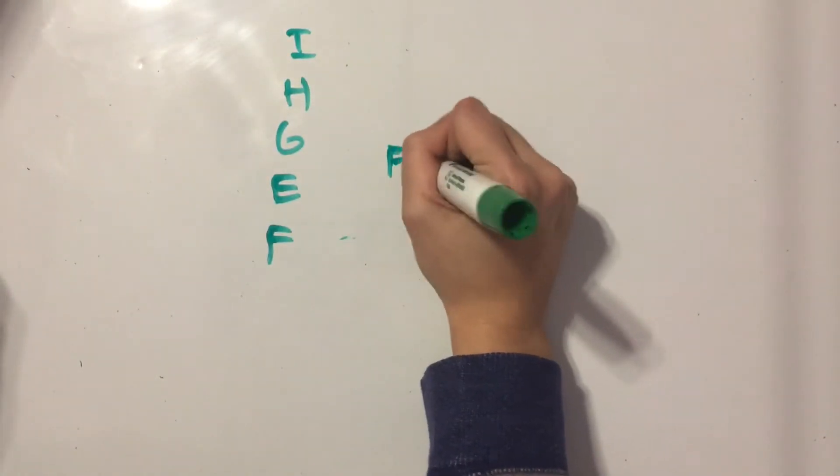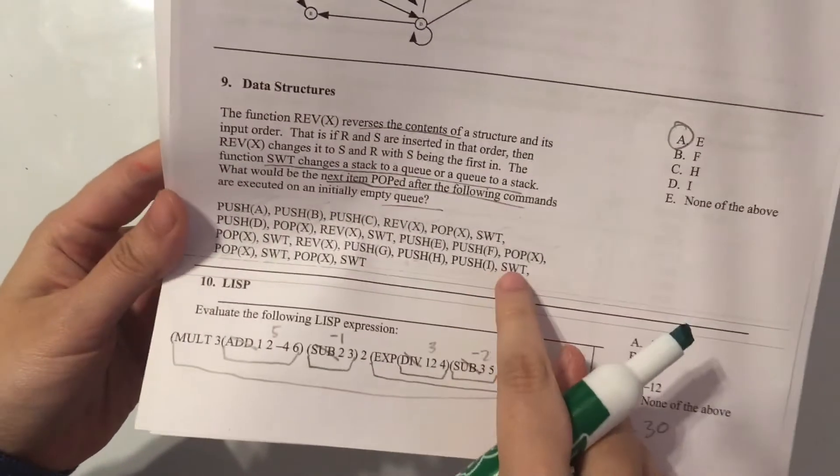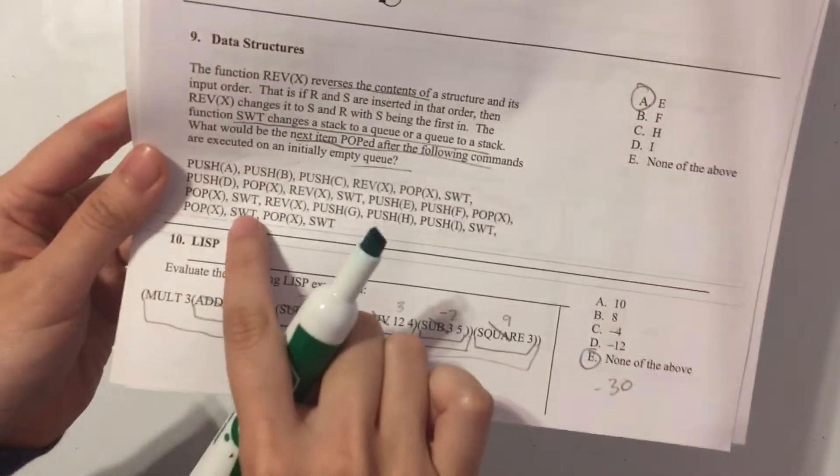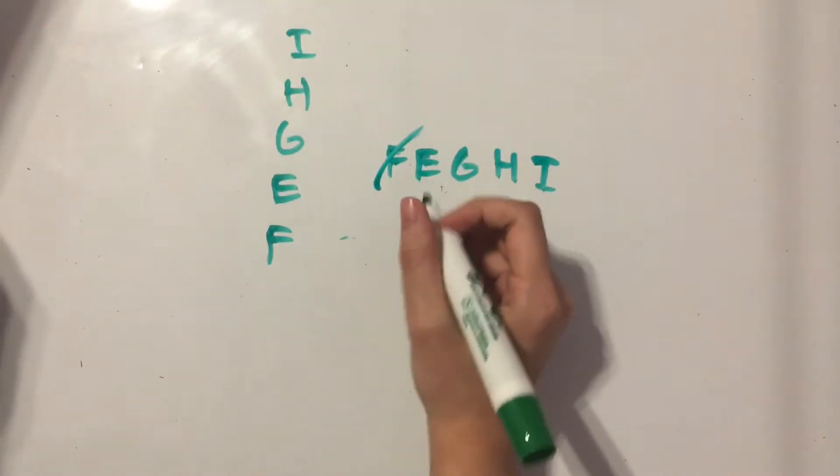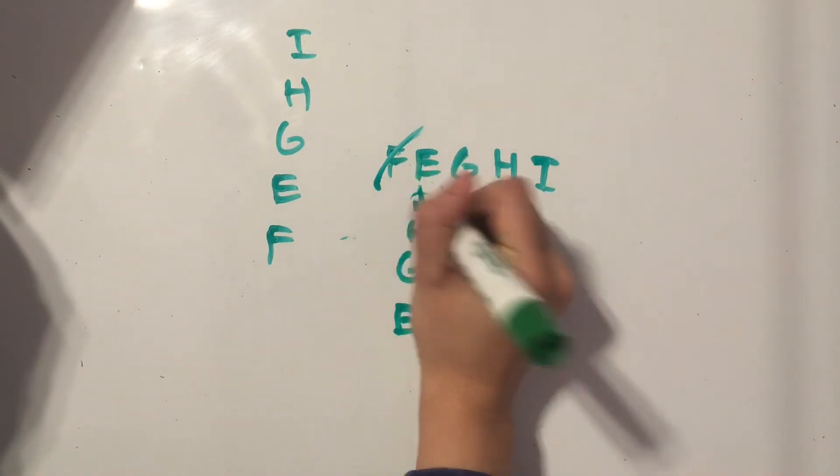So F, E, G, H, I. After switching, we pop out the first one. Then we switch. So we have E, G, H, I in a stack.